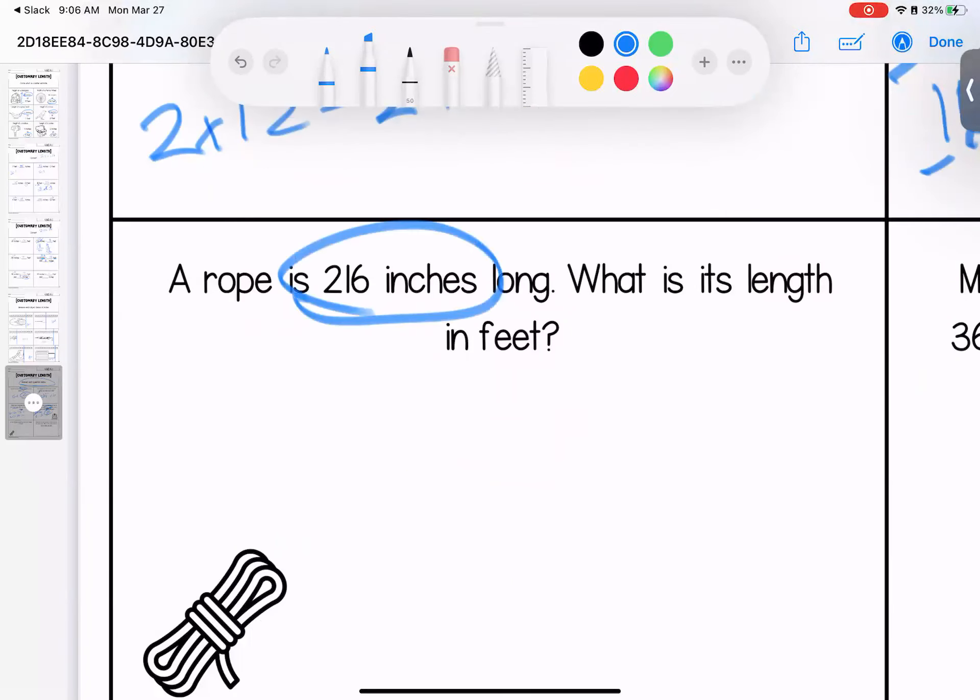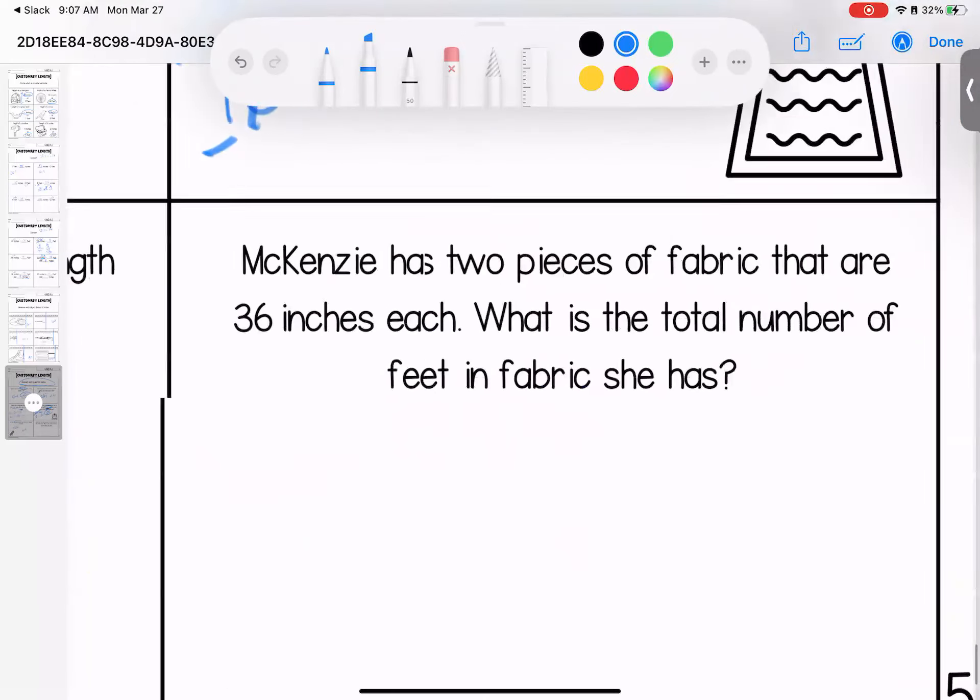A rope is 216 inches long. What is its length? We had to do 216 divided by 12. If that was icky, sticky, tricky, you could use guess and check multiplication as well. You would get 18 feet.